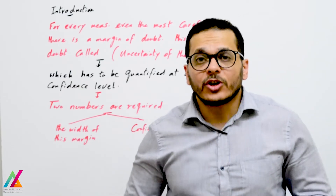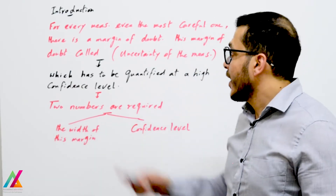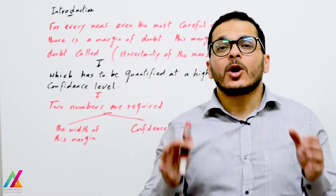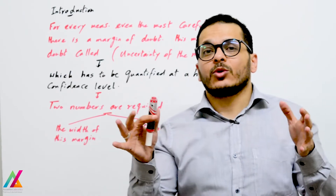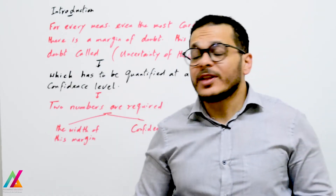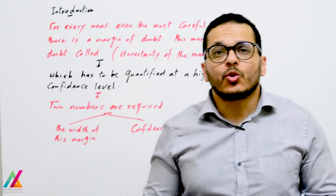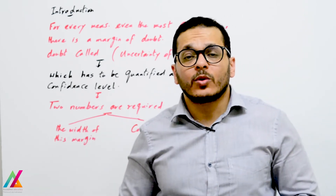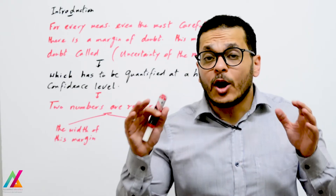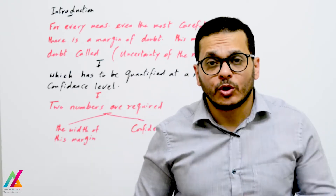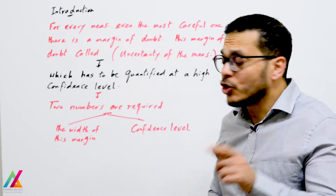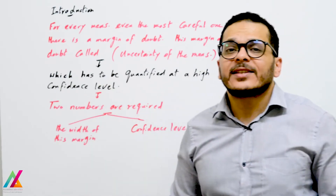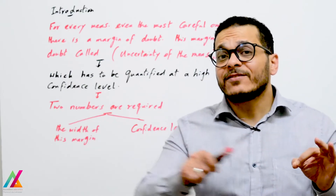Introduction: for every measurement, even the most careful one, there is a margin of doubt. This margin of doubt is called the uncertainty of the measurement. Uncertainty, or measurement uncertainty, is how much doubt you have with your analytical measurement.